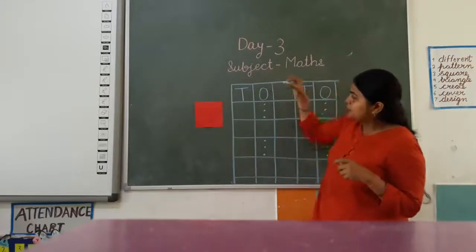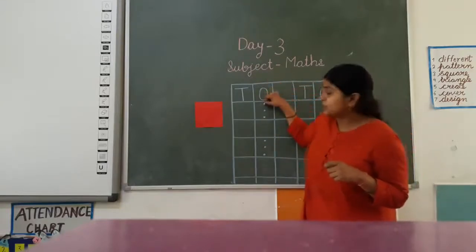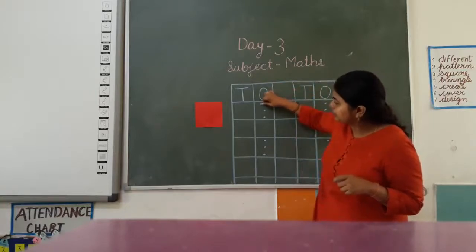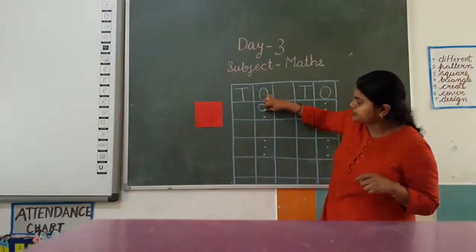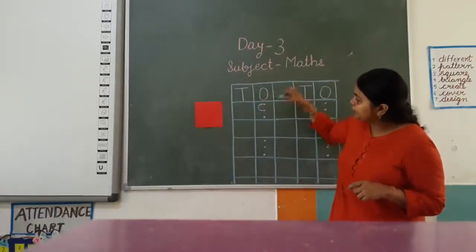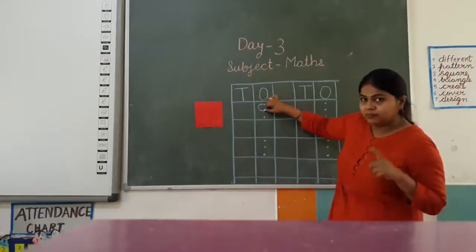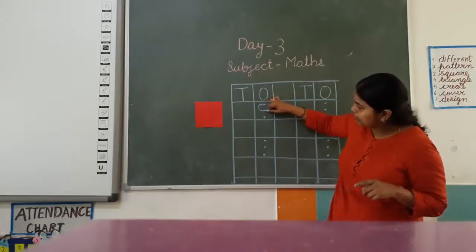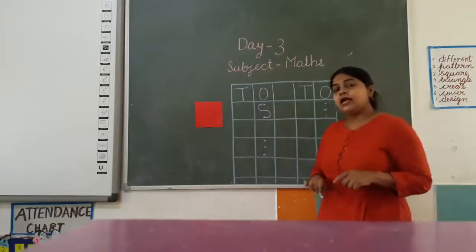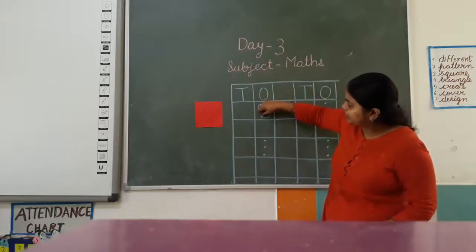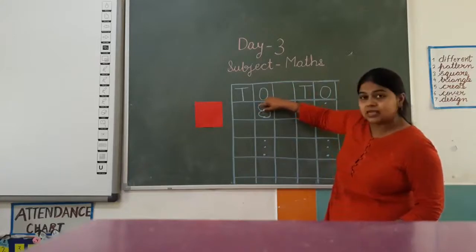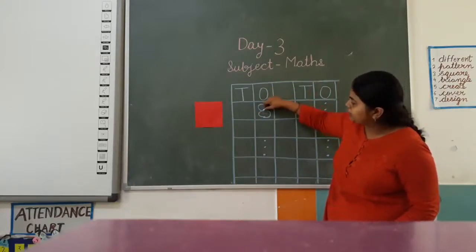Then put your pencil on the first dot. Make a curve and go downward like this. Again put your pencil on the middle dot and make a curve downwards like this. And then from the last dot, again put your pencil here and make a curve like this.